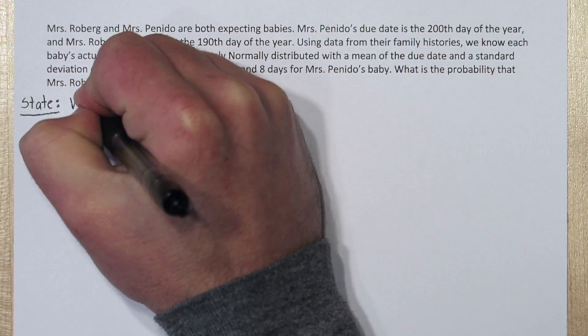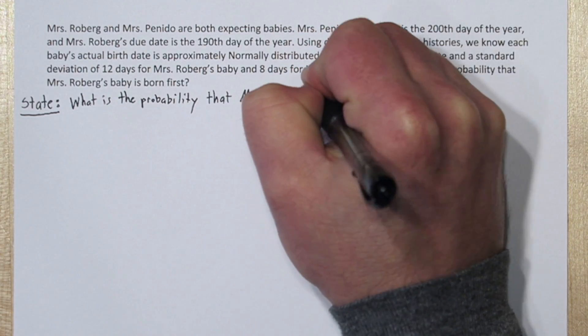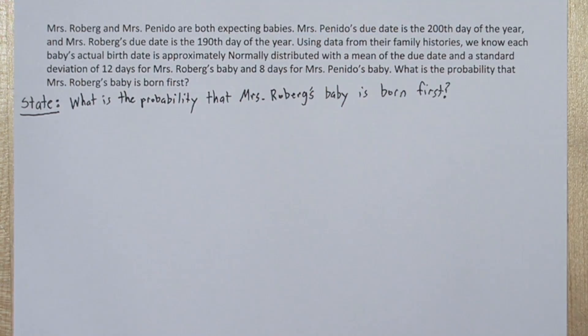We're going to use the four-step solving process. Let's start with state. What is the probability that Mrs. Roberg's baby is born first?